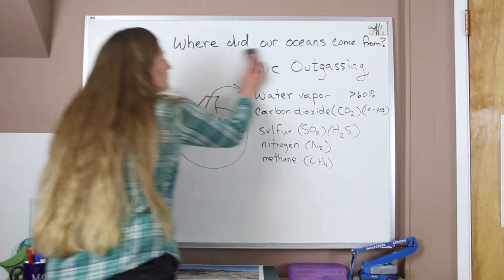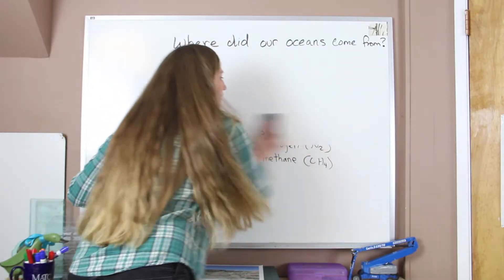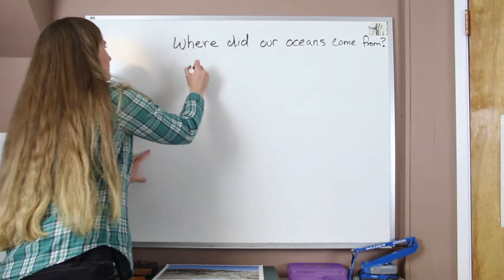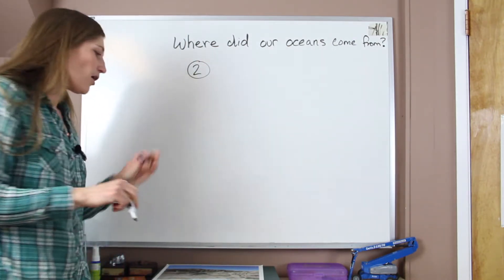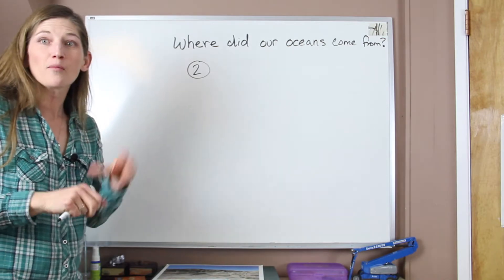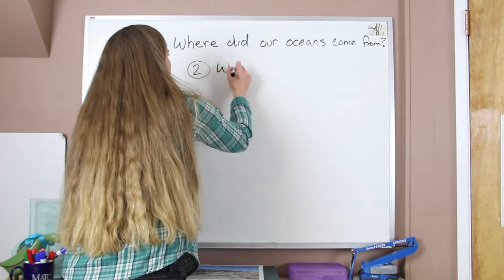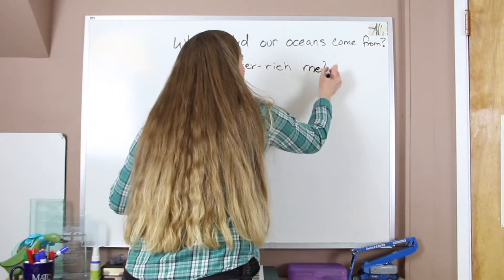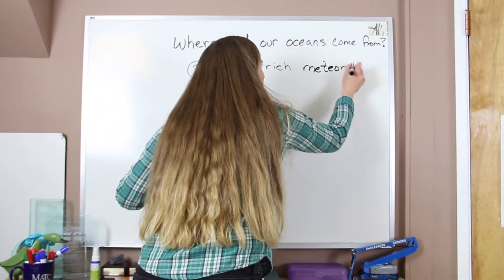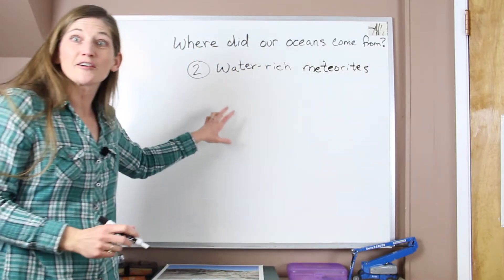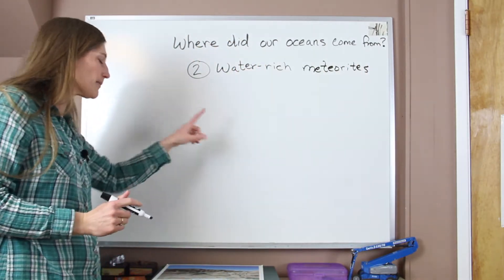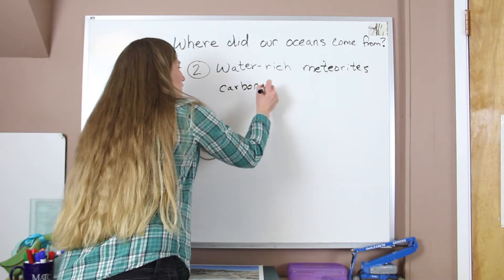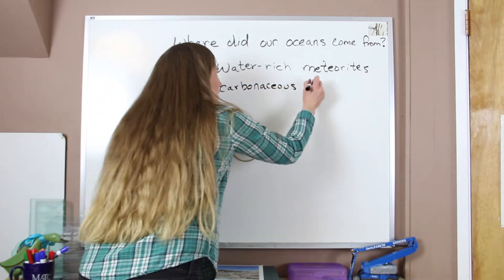Okay, so that's number one. Hypothesis number two is that all of this water could come from water-rich meteorites. So these are our space rocks, specifically carbonaceous chondrites.